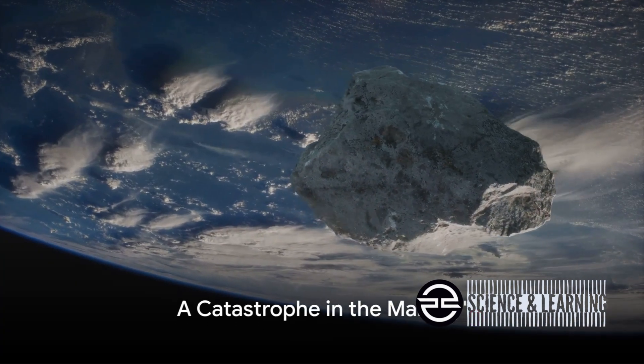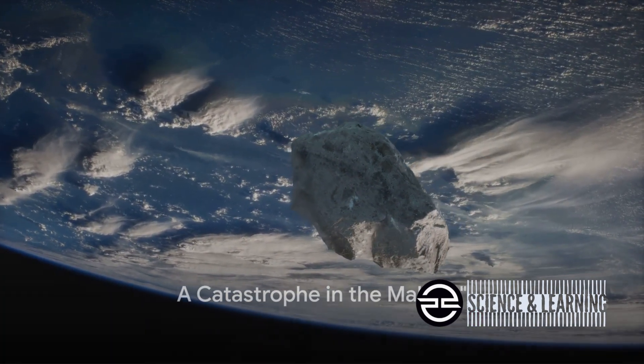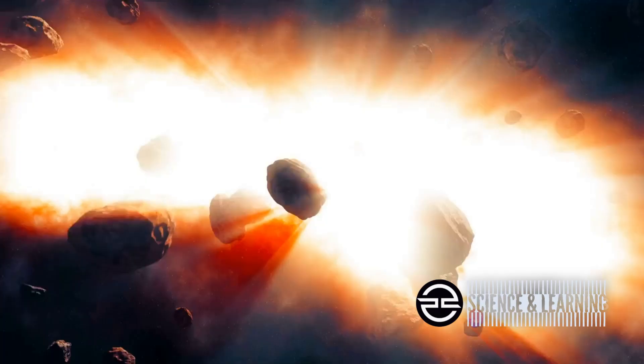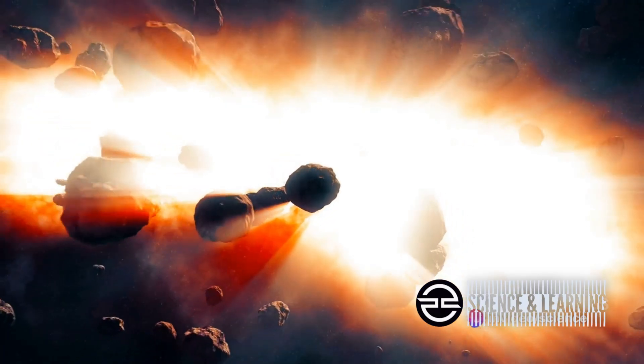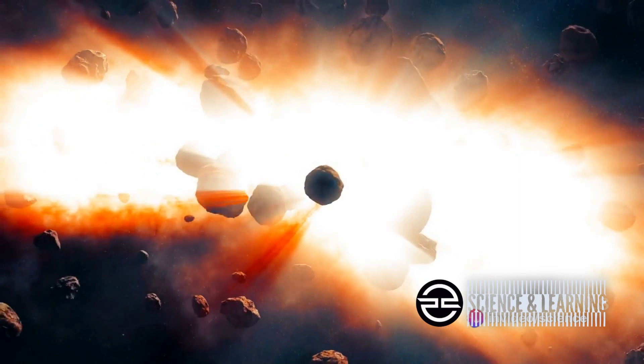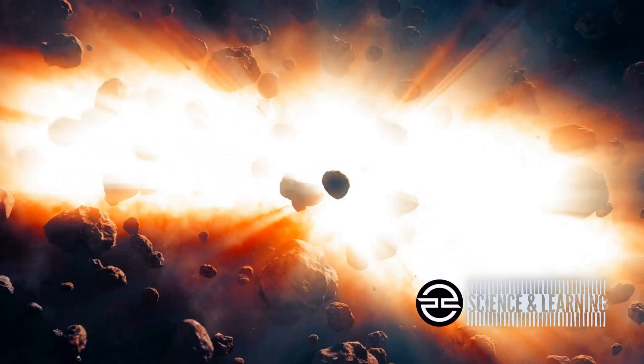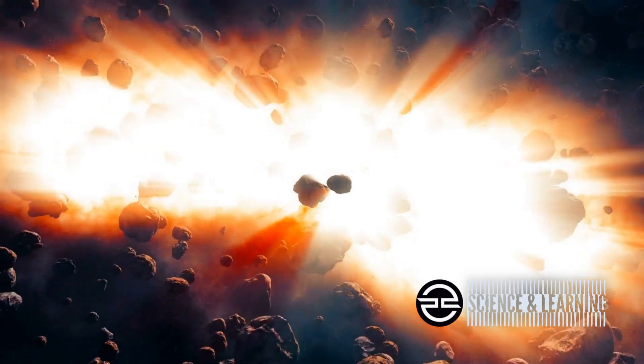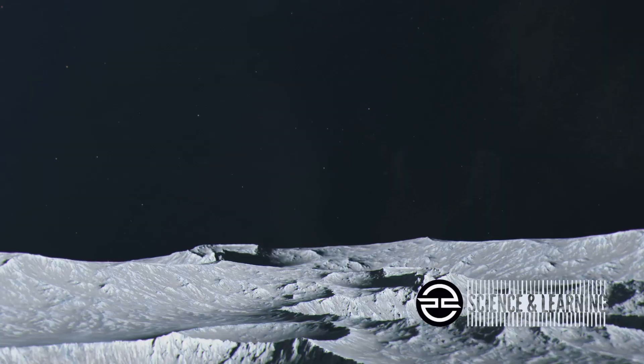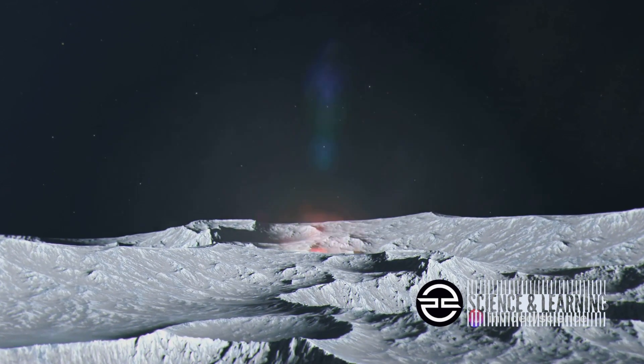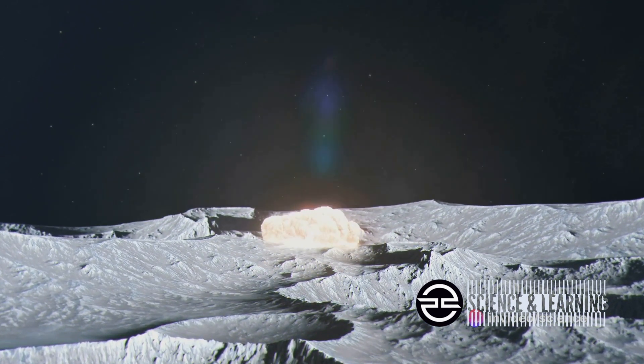Imagine the energy of 22 atomic bombs. That's the kind of devastation we're talking about if Bennu hits Earth. Now, let's put this into perspective. Remember the meteor that hit Russia in 2013? The Chelyabinsk meteor was only about 20 meters in size, but it exploded with 20 to 30 times the energy of the Hiroshima atomic bomb. Now imagine an asteroid that's 500 meters in diameter. That's Bennu.